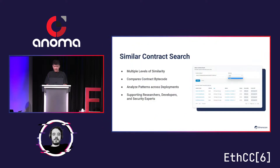What sets similar contract search apart is the level of detail it provides. When utilising this feature, users gain access to comprehensive information about the level of similarity between different contracts — high, medium, or low similarity. You can also explore the different ages of deployment, allowing you to track the evolution of contract deployment. Additionally, you can access details on the balances held by these contracts, which can offer insights into their economic significance.